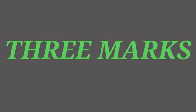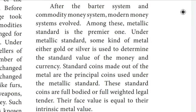Now we revise Chapter 5 and Chapter 6 three-mark questions. Question number 1: Write a note on metallic money. After the barter system and commodity money system, the modern money system evolved. Under metallic standard, some kind of metal — either gold or silver — is used to determine the standard value of money. Standard coins made out of the metal are the principal coins used. These coins are full-bodied legal tender; their face value equals their intrinsic metal value.